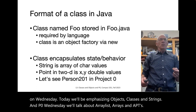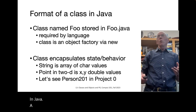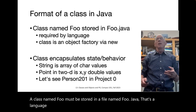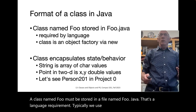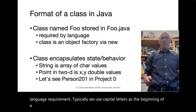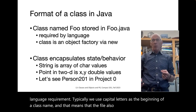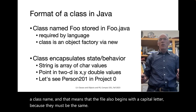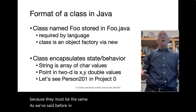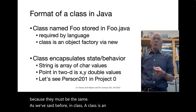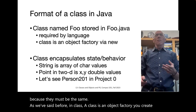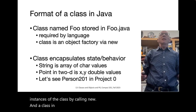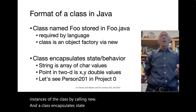In Java, a class named Foo must be stored in a file named Foo.java — that's a language requirement. Typically we use capital letters at the beginning of a class name, which means the file also begins with a capital letter. As we've said before in class, a class is an object factory: you create instances of the class by calling new.